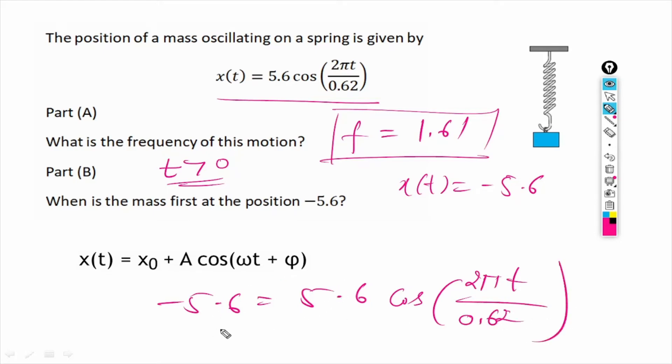Now if we cancel this, then we will have cos equals minus 1. Cos of this thing equals minus 1.